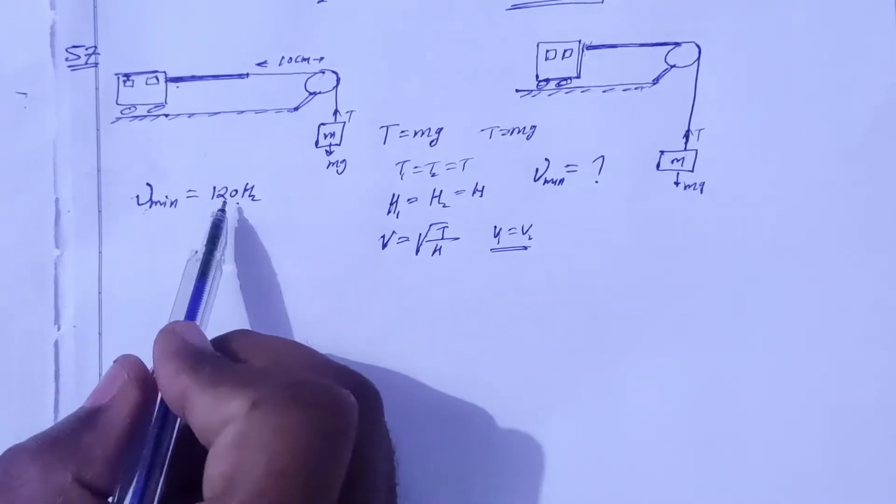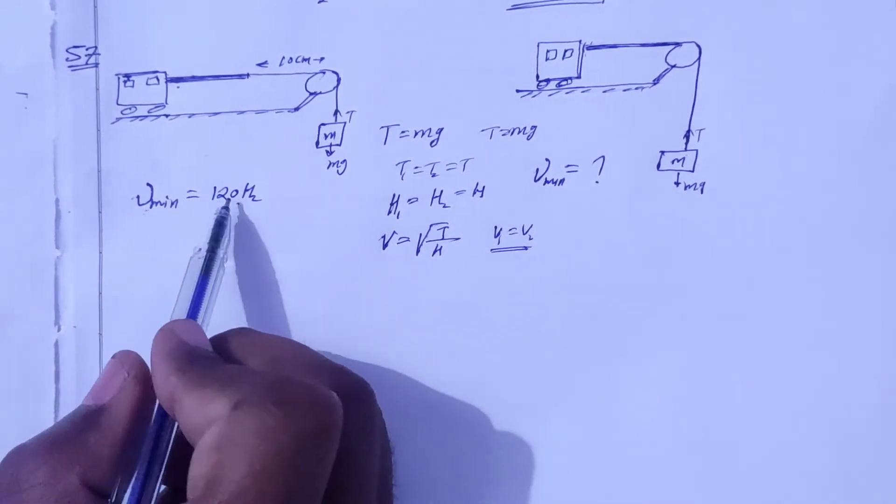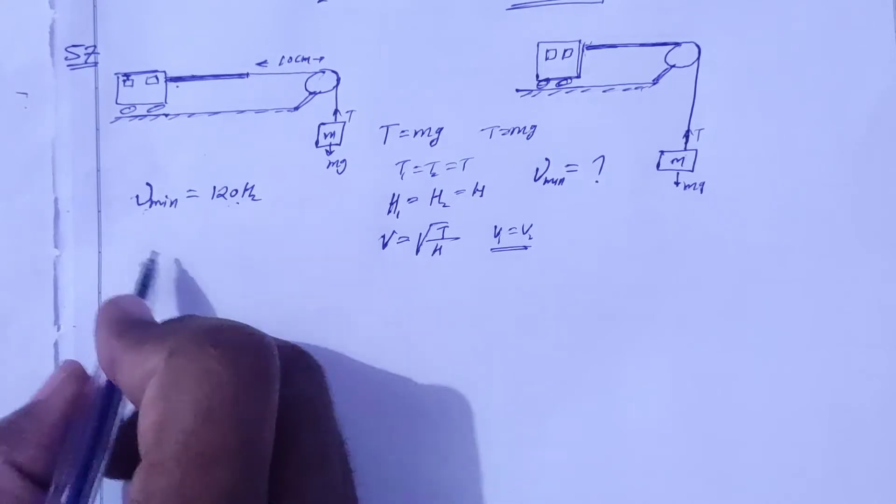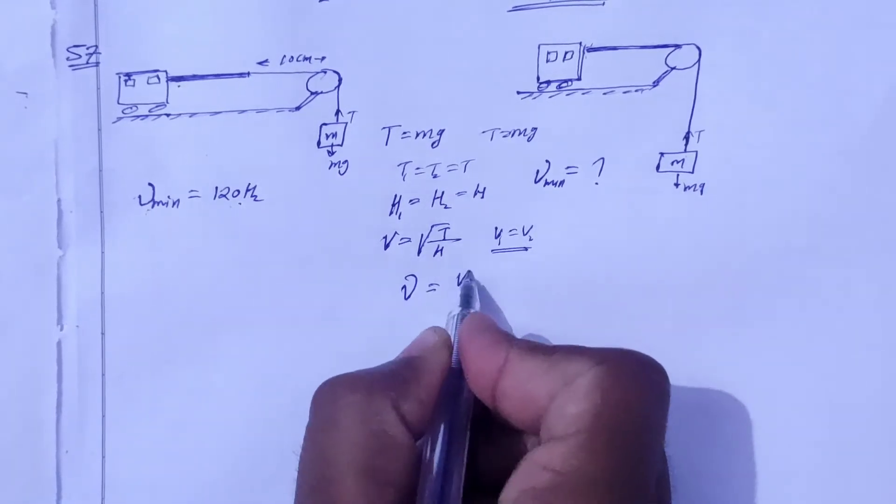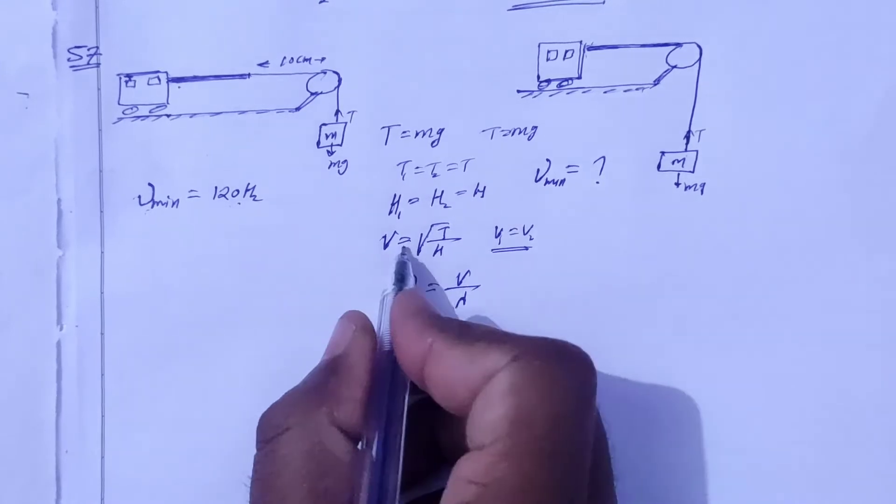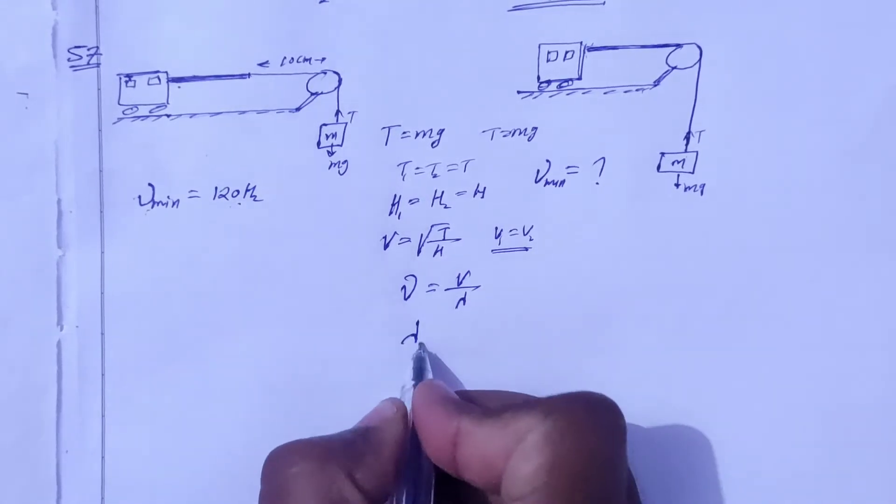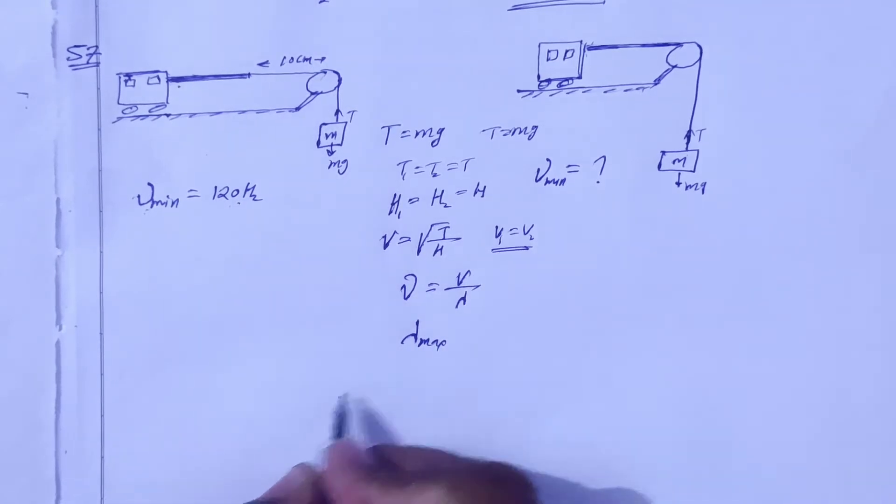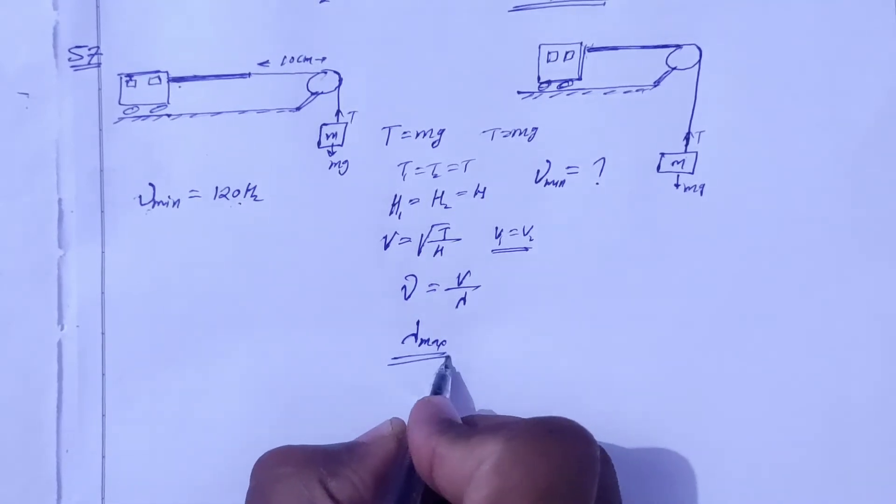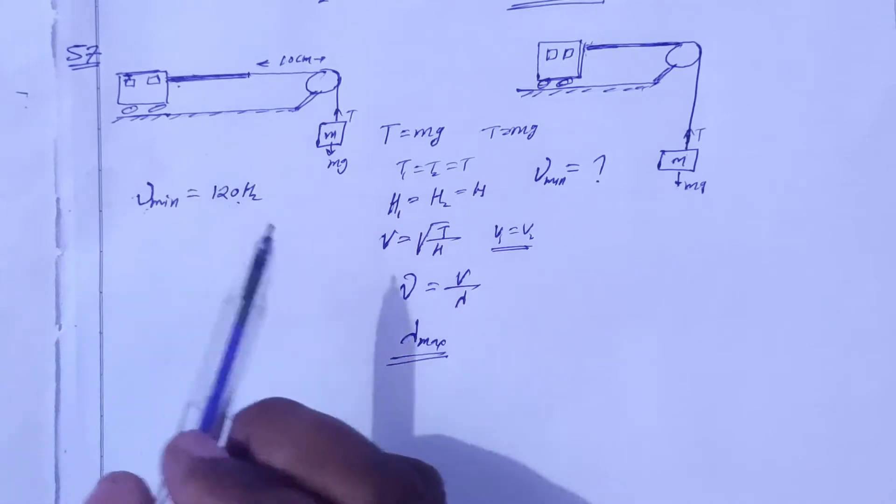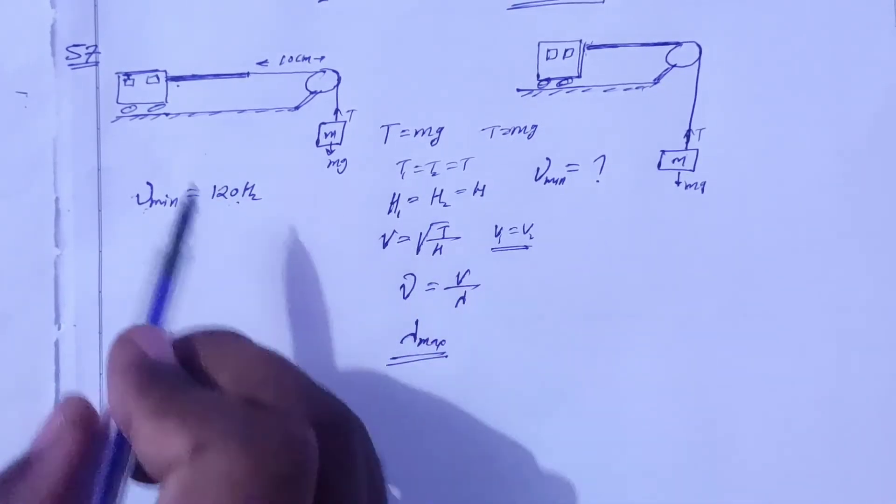Frequency minimum, so for minimum frequency, frequency is equal to speed by lambda. Speed is the same thing. For frequency minimum, what should lambda be? Lambda should be maximum. For lambda maximum, it's the fundamental mode.